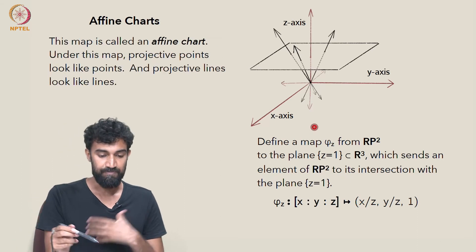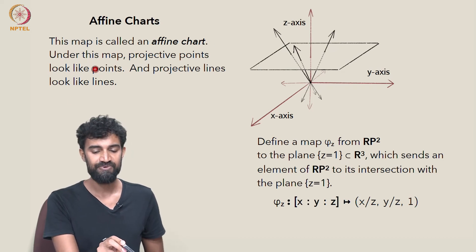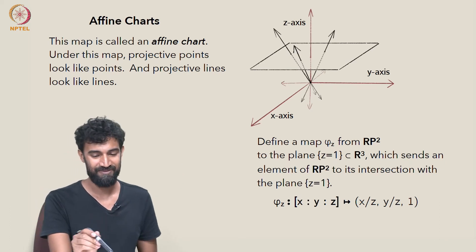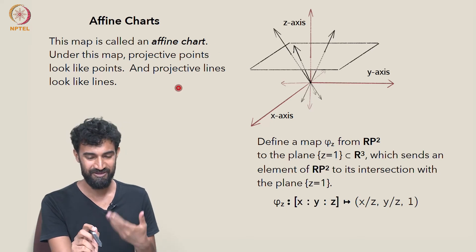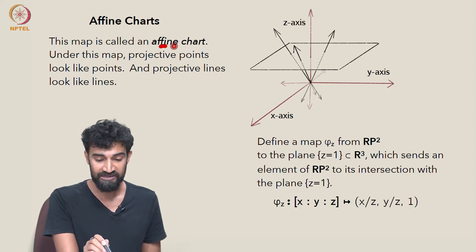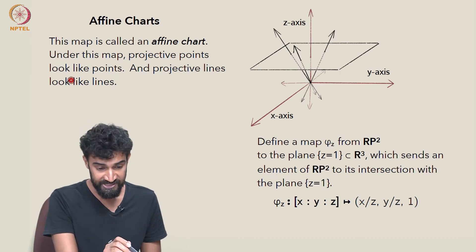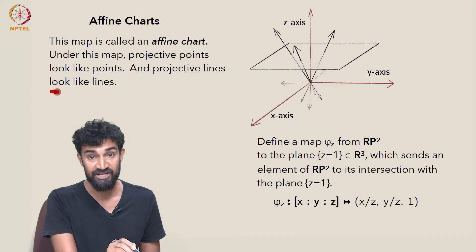So this map is called an affine chart. And under this map, a chart, by the way, a chart is just another word for a map basically for us, so that terminology doesn't mean anything very special here. This map is called an affine chart, and under this map, projective points look like points and projective lines actually look like lines.